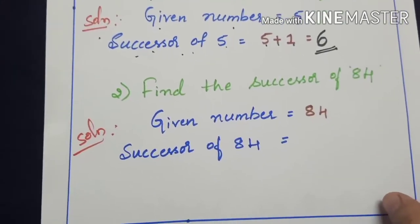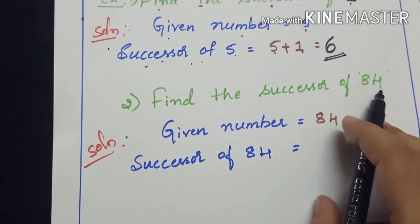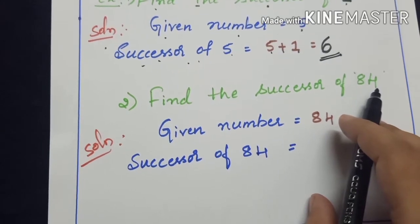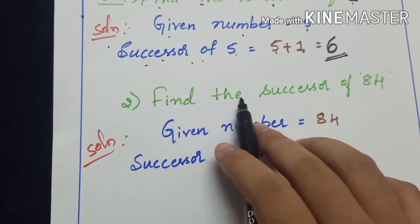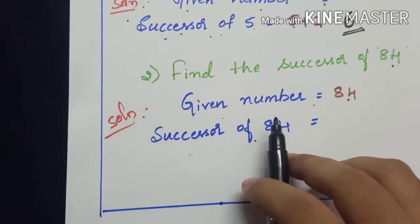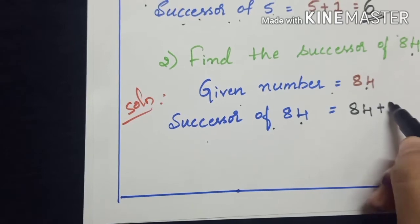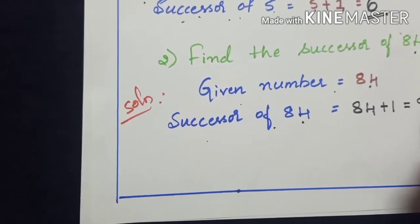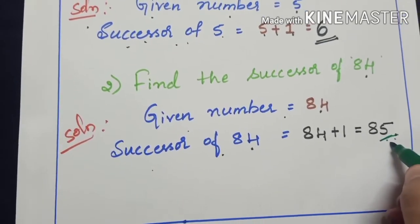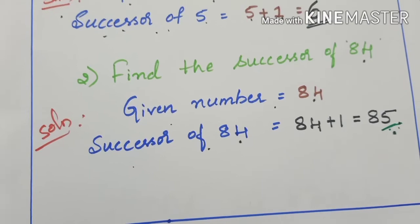Let me take you to another example. Find the successor of 84. You can pause the video and try it out by yourself, then come back and check whether your answer is right or wrong. The given number is 84. To find the successor, add plus 1: 84 plus 1 is 85. I hope you got the same answer — 85 is the right answer. Similarly, find the successor of 89: 89 plus 1 is 90.